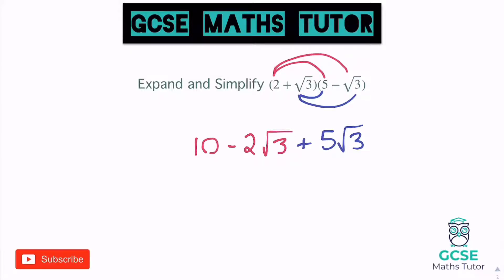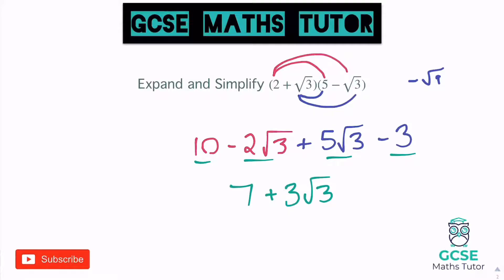And then positive root 3 times negative root 3 makes negative root 9, which is minus 3. Finishing that up, I've got 10 take away 3 — my two numbers — which is 7. And my two root-3 terms: negative 2 root 3 add 5 root 3 — negative 2 add 5 is positive 3 — so it's plus 3 root 3. Final answer: 7 plus 3 root 3.